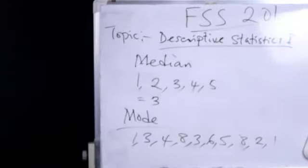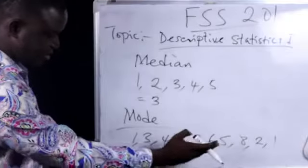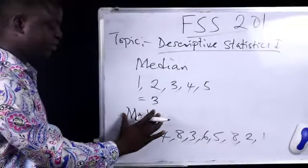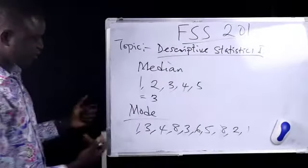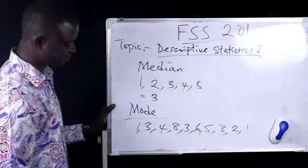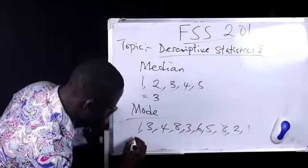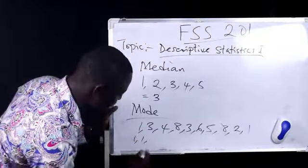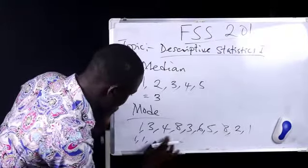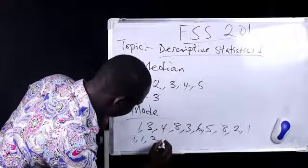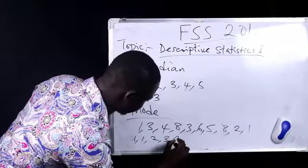Now, the one that occurs most is what we refer to as mode. So let's arrange this data in ascending order. We have 1, 1, 1, 1. We have 2, 2, 2. We have 3, 3, 3, that's 2, 3.